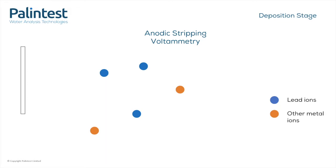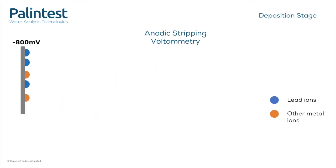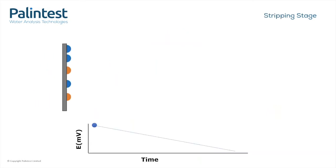The Heavy Metals test works through something known as ASV, or anodic stripping voltammetry. During the first stage of testing, a voltage is applied to the electrodes which causes the metal ions to stick to the sensor electrode, as demonstrated here. Then as the voltage is gradually changed, these ions will come back off the sensor causing a current change. The lead ions will come off at a specific voltage, so the point at which the ions jump off the sensor lets us know what kind of ions they are, and this is used to calculate the concentration of lead in water.